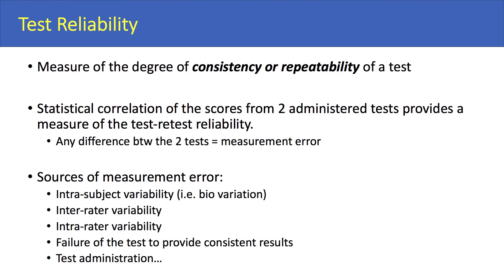Another source of measurement error is intra-rater variability. An example: on day one I encourage the testee — 'go, go, go, push, push, push' — and they push harder. Then on day two I don't provide any verbal encouragement. This is a form of intra-rater variability, in that I'm not being consistent with the way I'm providing verbal encouragement. Also, the test itself can be inherently flawed, providing inconsistent results — that's another source of measurement error.